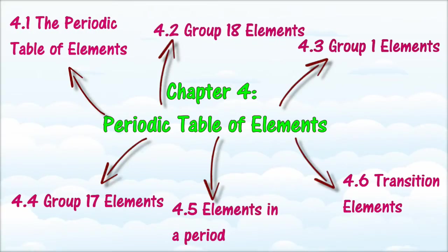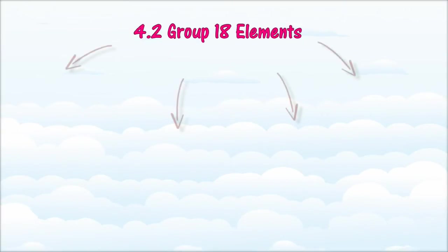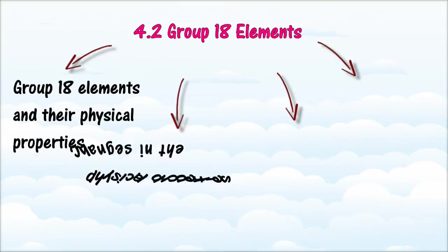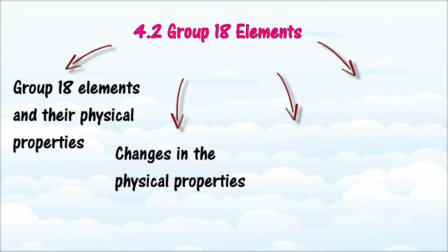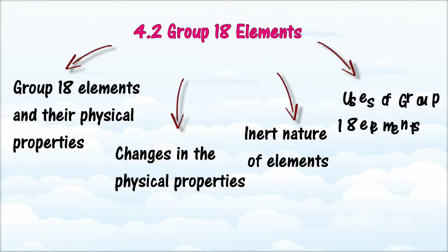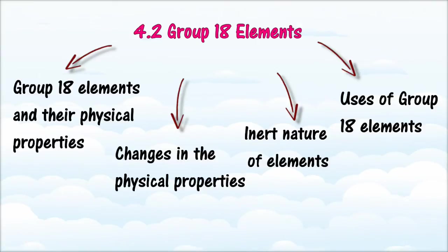In section 4.2, we will learn about elements in Group 18. At the end of this section, you should be able to list all Group 18 elements, state their general physical properties, describe changes in physical properties down the group, describe the inert nature of Group 18 elements, relate their inert nature to electron arrangements, relate duplet and octet electron arrangements to their stability, and describe uses of Group 18 elements in daily life.